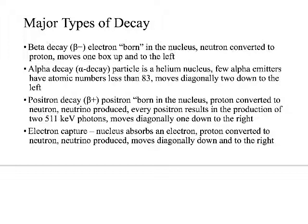In the case of electron capture, the nucleus actually sucks an electron into the nucleus and a proton is converted into a neutron. The atom sucks an electron into the nucleus, marries that electron to a proton, and it in turn becomes a neutron. We go down on the periodic table and move down towards the line of stability. It's interesting to note that both positron decay and electron capture have the same consequence in terms of moving the element towards the line of stability, but they are very different processes.